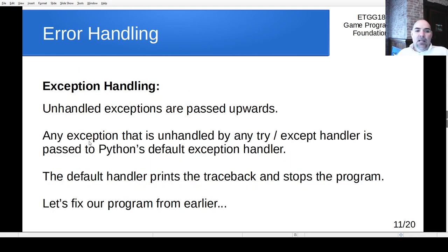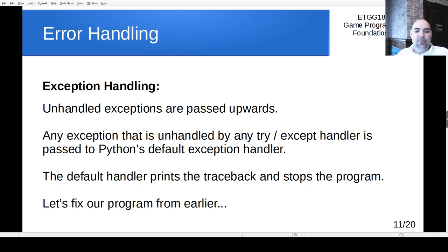With exception handling, if we don't handle an exception it gets passed upwards. If it makes it all the way to the Python interpreter's default exception handler, that's what prints out the traceback and stops the program. The Python interpreter has this built-in exception handling capability that essentially says here's the error, here's where it was, here's what type of error it was — and then it halts the program. Let's go back to that program where they typed 'TEN' instead of 10 and fix it with exception handling.